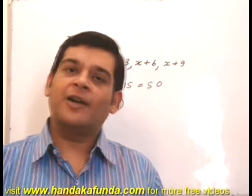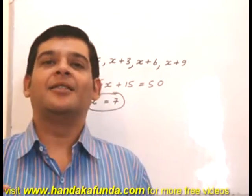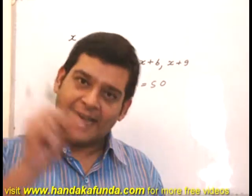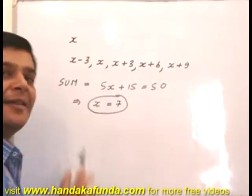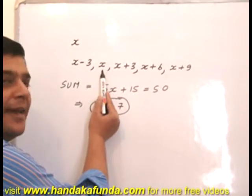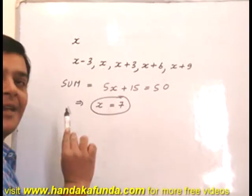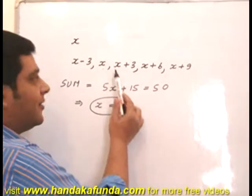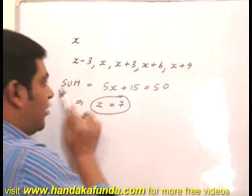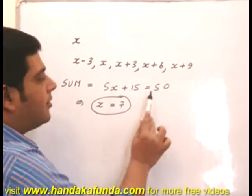So here I have to find out the age of the second youngest child. So instead of taking any arbitrary son as X, I take the second youngest child as X. We know that they are at a gap of 3 years. So if the second youngest child is X, the youngest child is X minus 3, third one is X plus 3, then X plus 6 and X plus 9. We are also given the sum of the ages is 50.